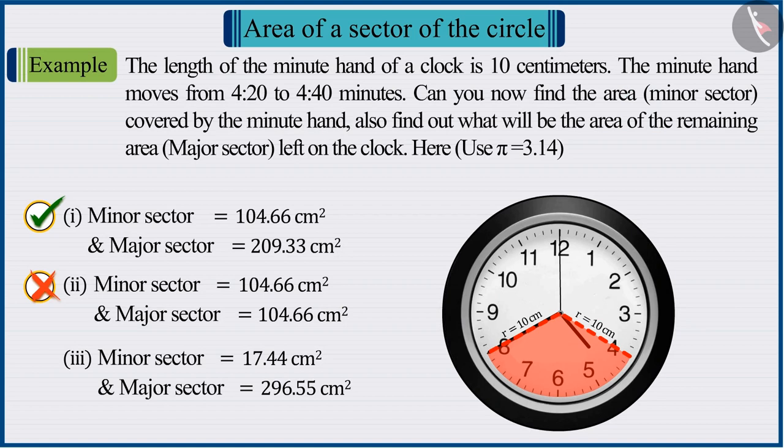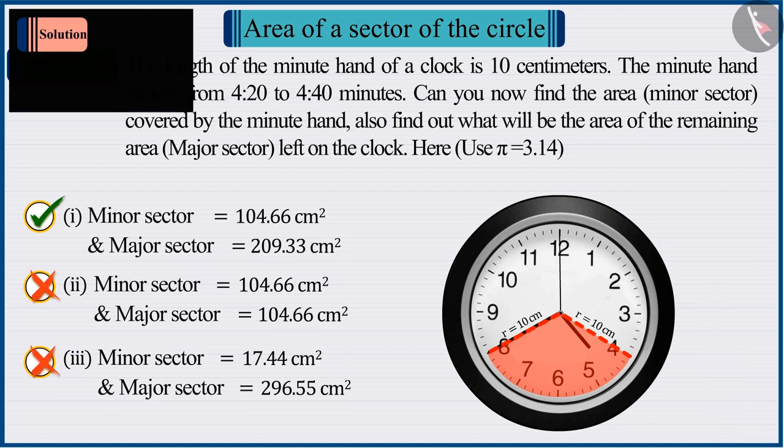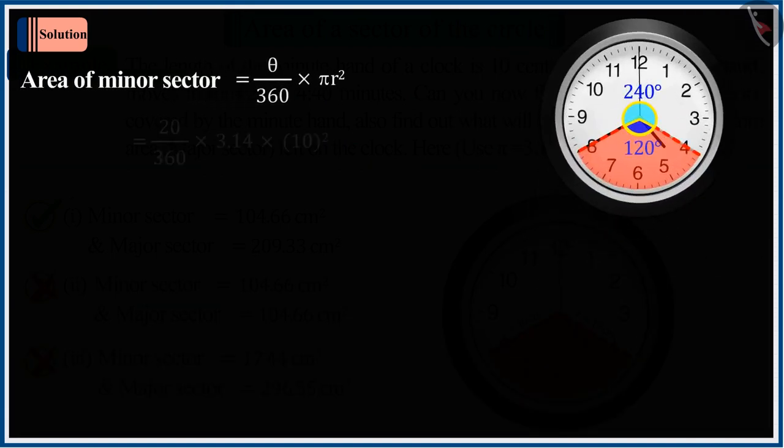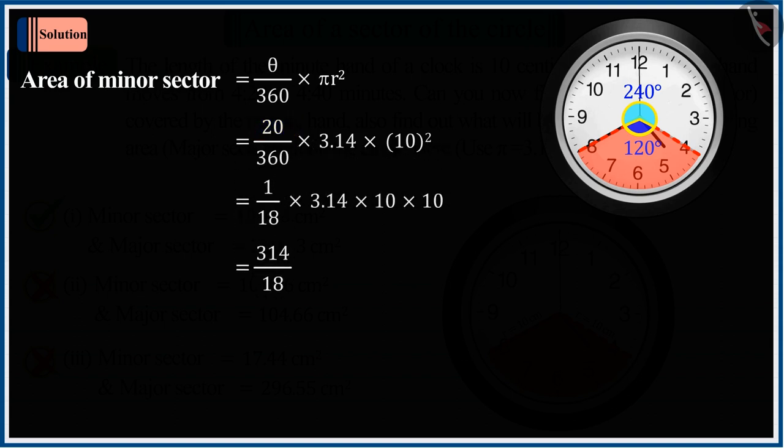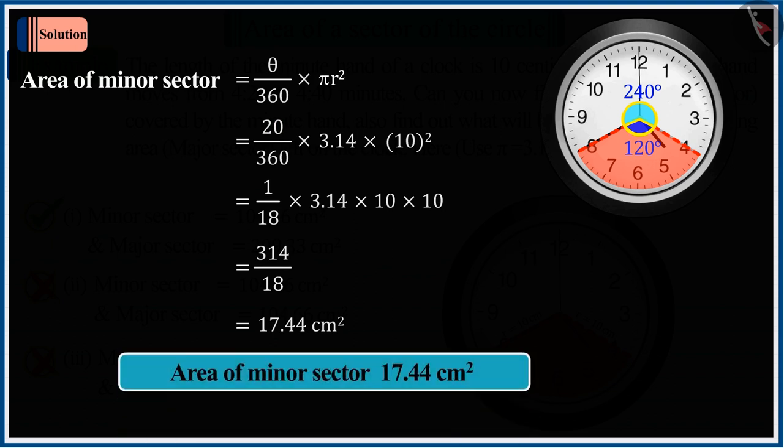If you have selected option 3, it is a good try. But this is also the wrong answer. Because without finding the value of angle of the minor sector as 120 degrees, you put the value of angle as 20 degrees in the formula of the area of the sector and solved it further, which gives the incorrect value of the minor sector.